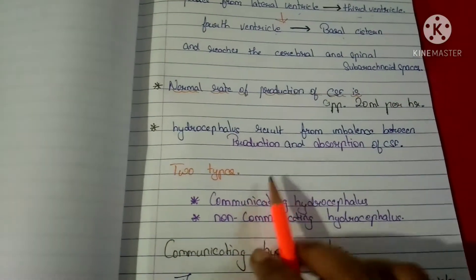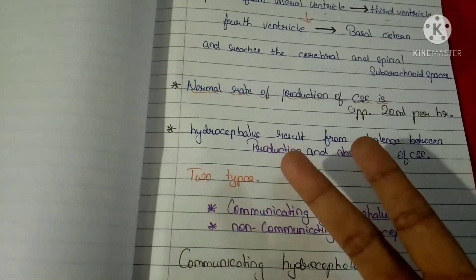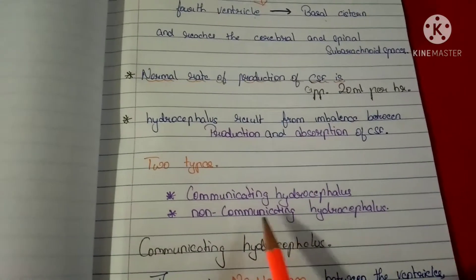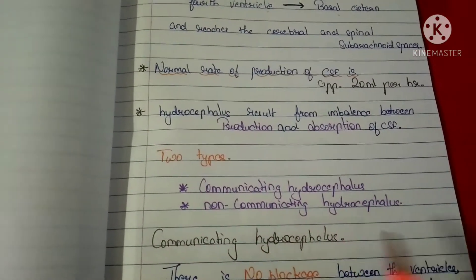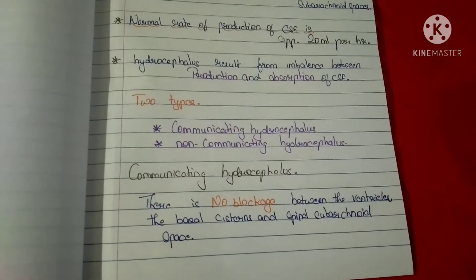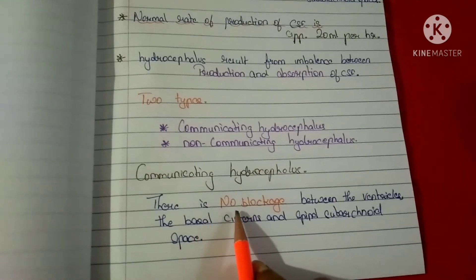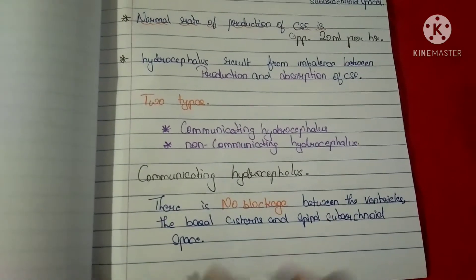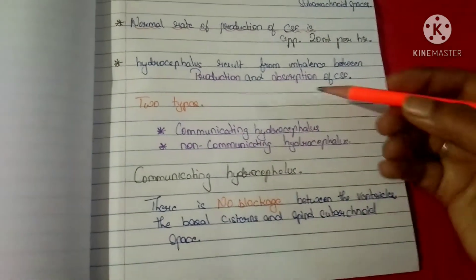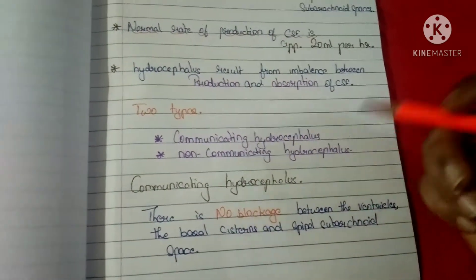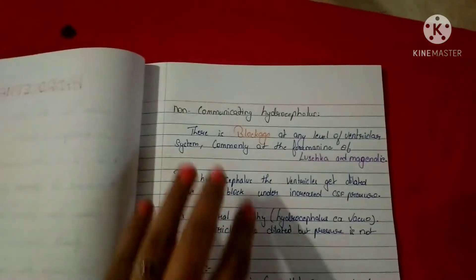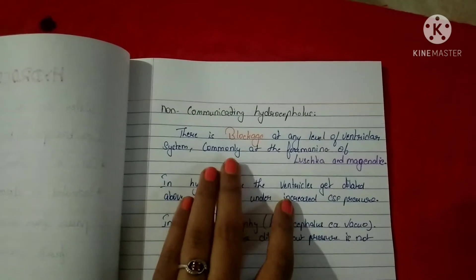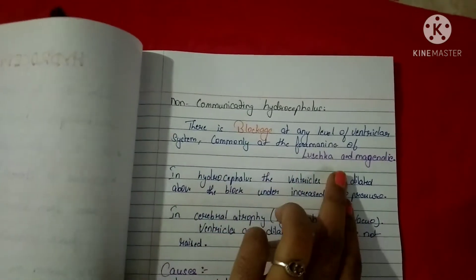There are two types of hydrocephalus: communicating hydrocephalus and non-communicating hydrocephalus. In communicating hydrocephalus, there is no blockage between the ventricles, basal cisterns, or spinal subarachnoid spaces. In non-communicating hydrocephalus, there is a blockage at any level of the ventricular system.